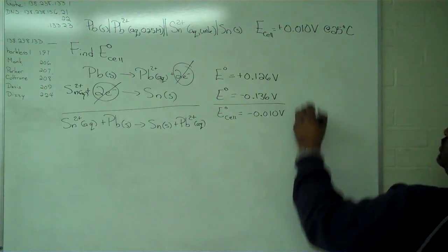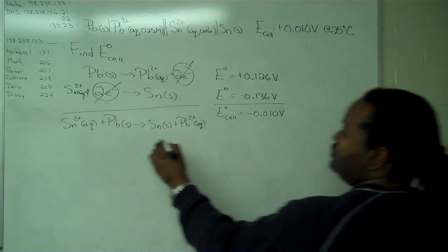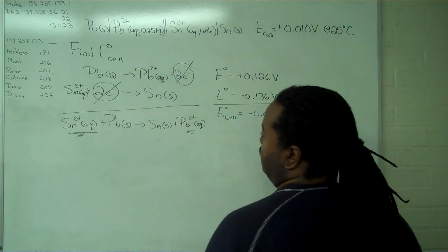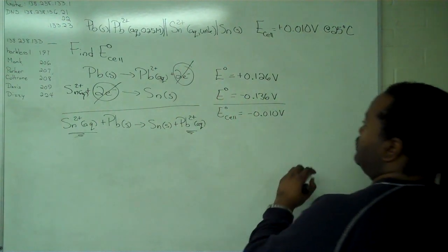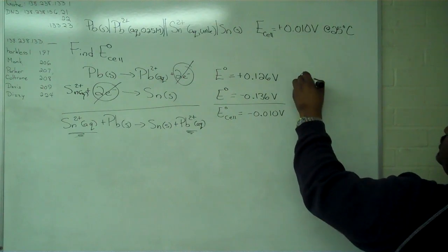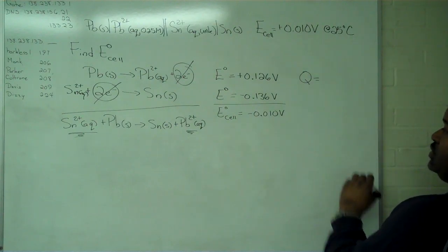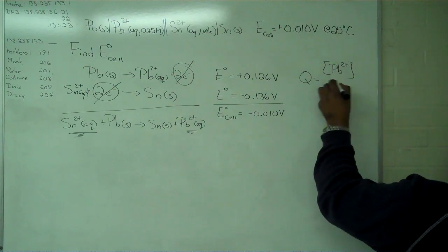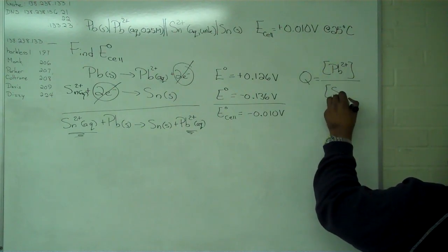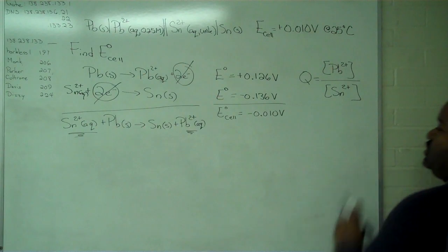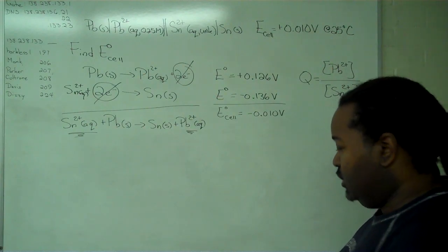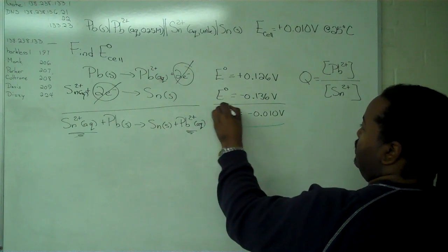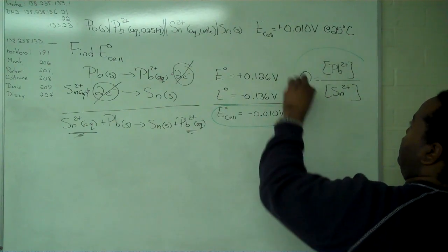To get the expression for Q, we only use the items in solution. Our expression for Q is the lead ion concentration divided by the tin ion concentration. Now we have two key pieces: E cell standard and an expression for Q.